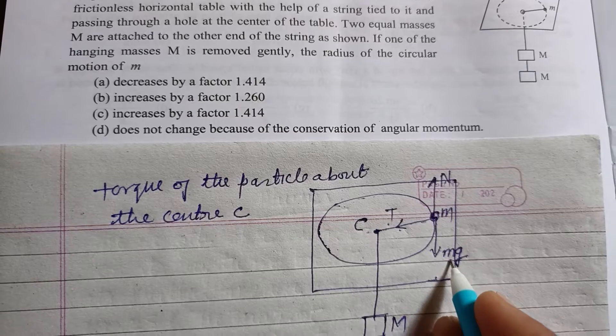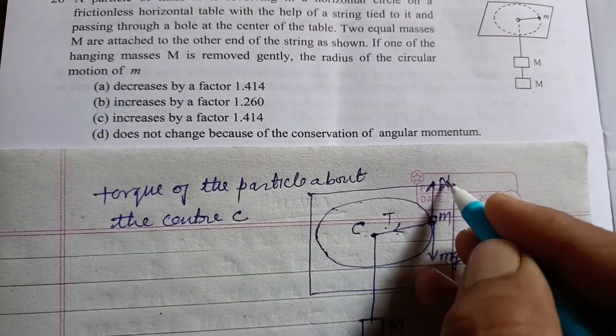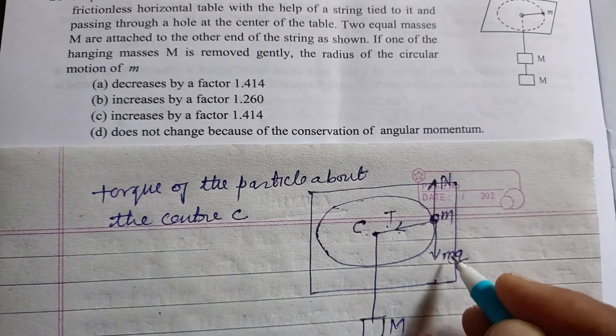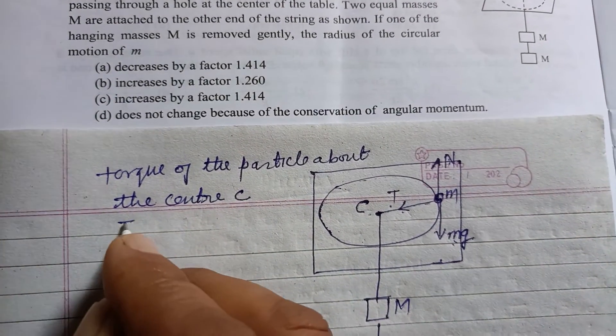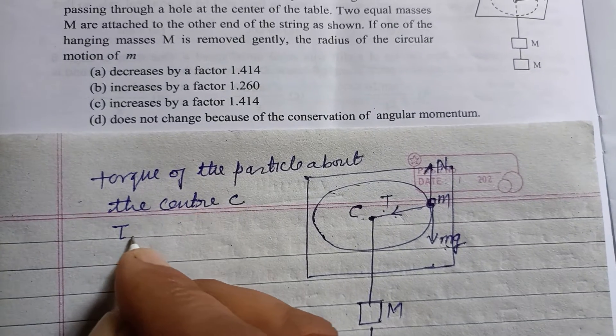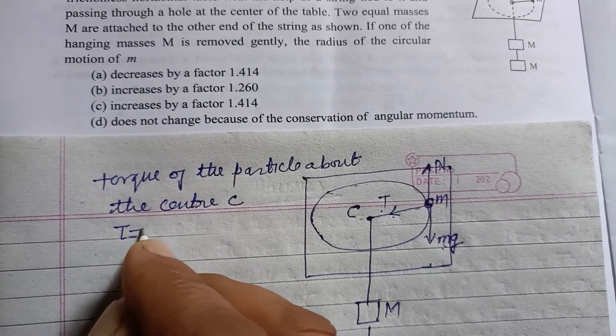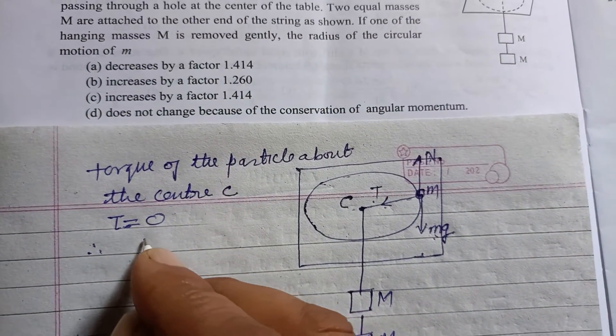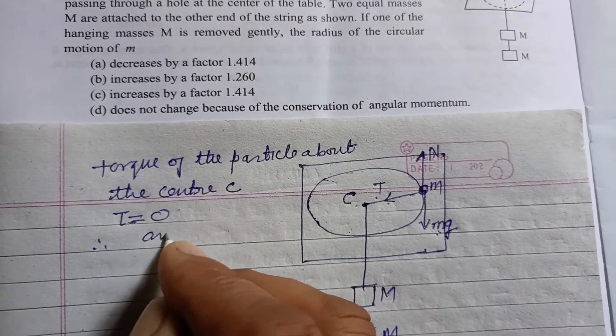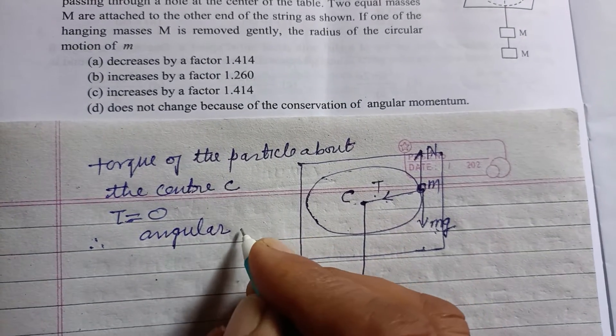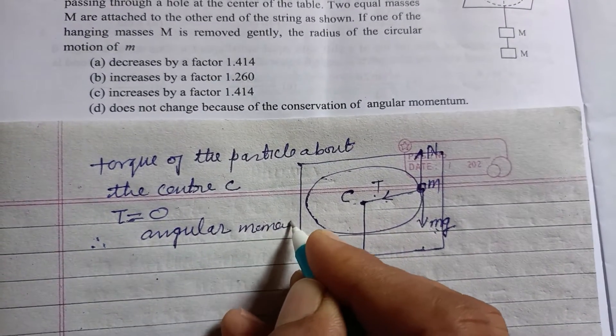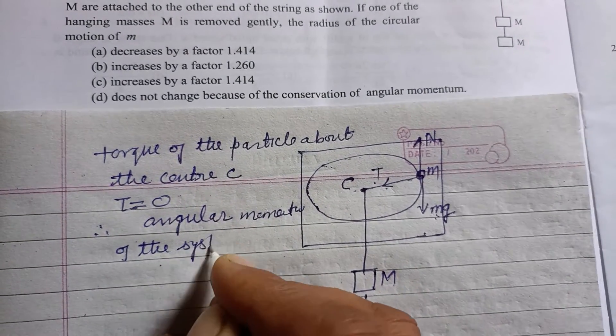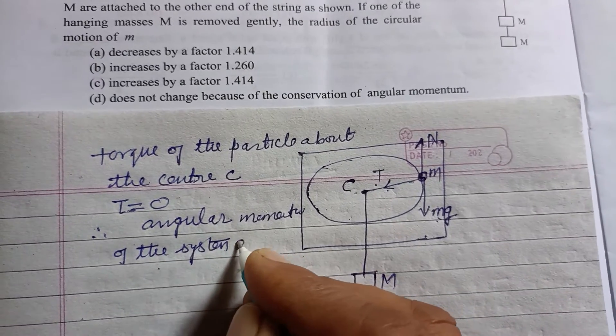N and mg cancel each other, or N moves in opposite direction to mg. Therefore, total torque is zero.